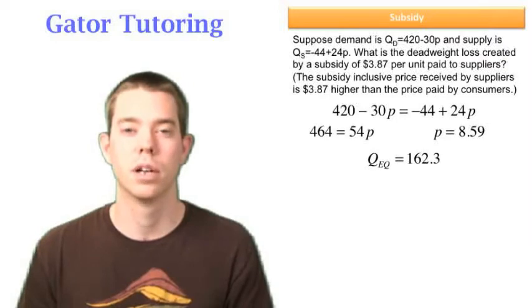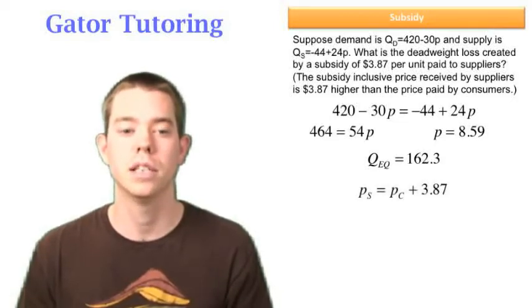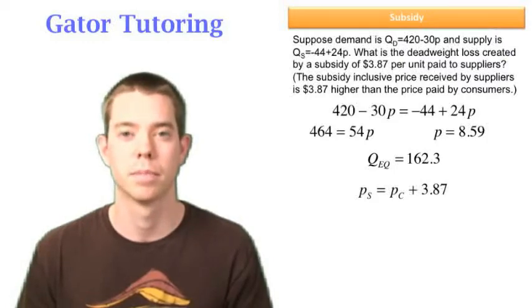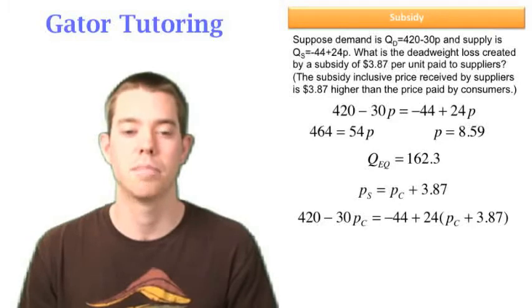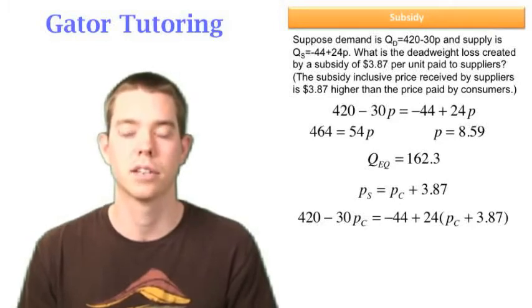So from here now let's take a look at what the subsidy does. Well it tells us that the inclusive price received by suppliers, which is PS, is $3.87 higher than the price paid by consumers. So that is saying this: PS is equal to PC plus 3.87. We know that the supply side is going to have PS and the demand side is going to have PC.